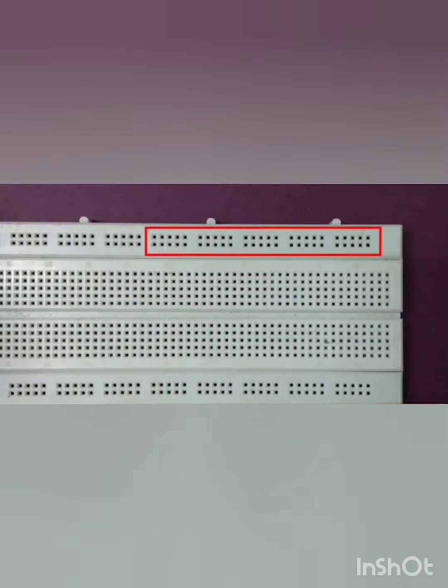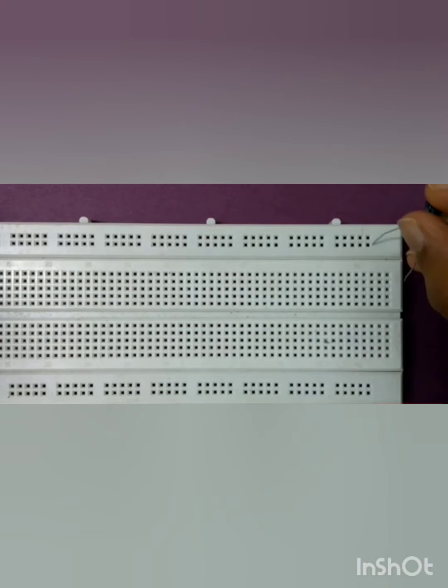For this circuit, I will use the upper row as the positive rail and the lower row as the negative rail. First, we will connect one terminal of the thermistor to positive and the other terminal to ground through a 10K resistor.